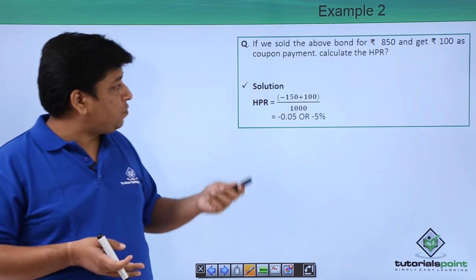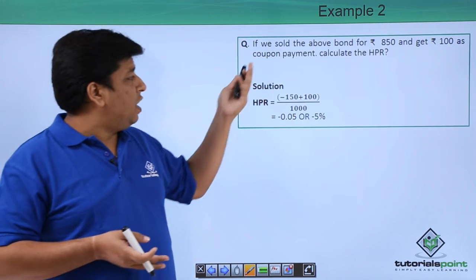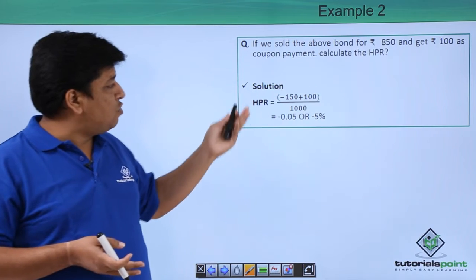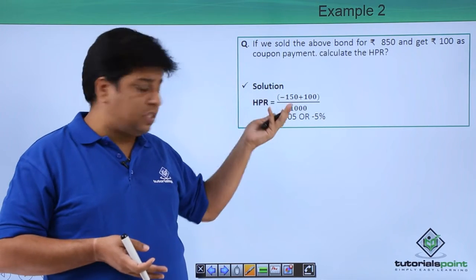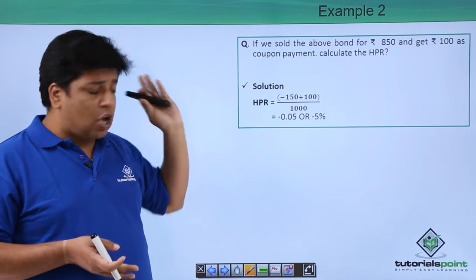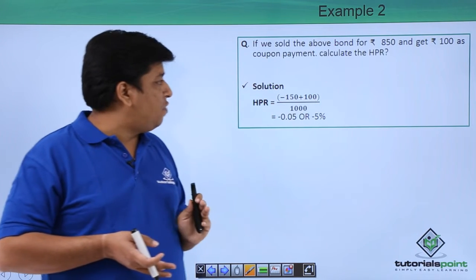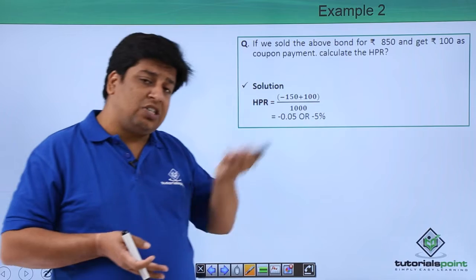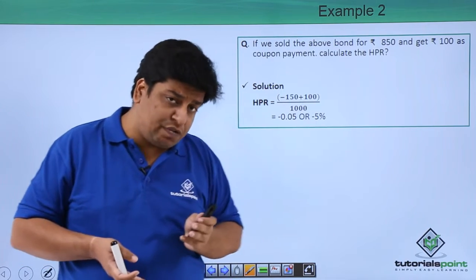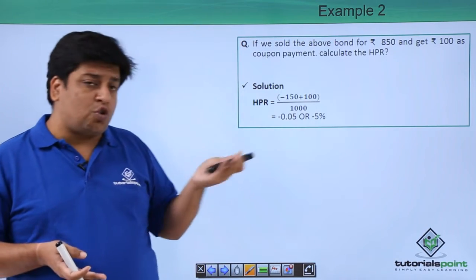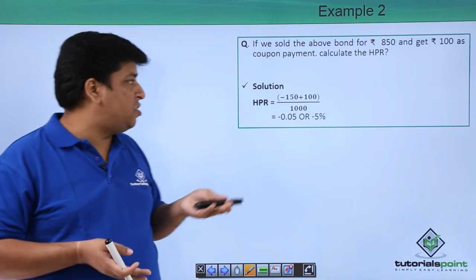₹1000 is the purchase price of the bond and you're selling this bond for ₹850. Earlier it was ₹1100, now it's ₹850, and ₹100 is your coupon payment. So what is your holding period return? If you see, you have made a loss of ₹150 by selling this bond at a discounted price.